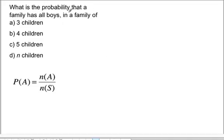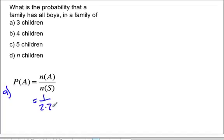What is the probability that a family has all boys in a family of three children? For every child the outcome is 50/50, so there is only one way you can end up with all boys, but there are two times two times two ways of having children. Since these are independent events, the probability is one over eight.